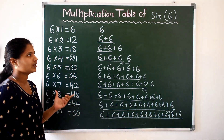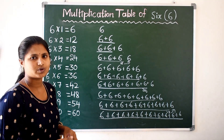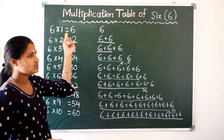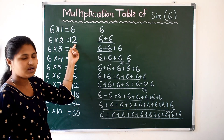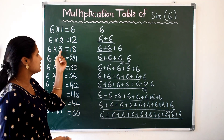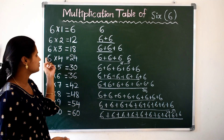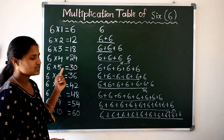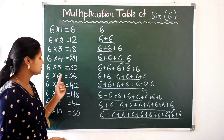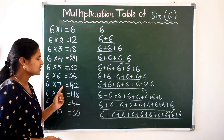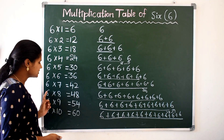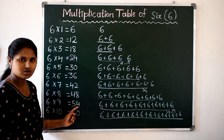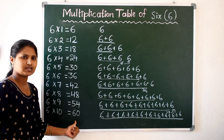So this is the multiplication table of 6. Let us read one more time: 6 1s are 6, 6 2s are 12, 6 3s are 18, 6 4s are 24, 6 5s are 30, 6 6s are 36, 6 7s are 42, 6 8s are 48, 6 9s are 54, 6 10s are 60.